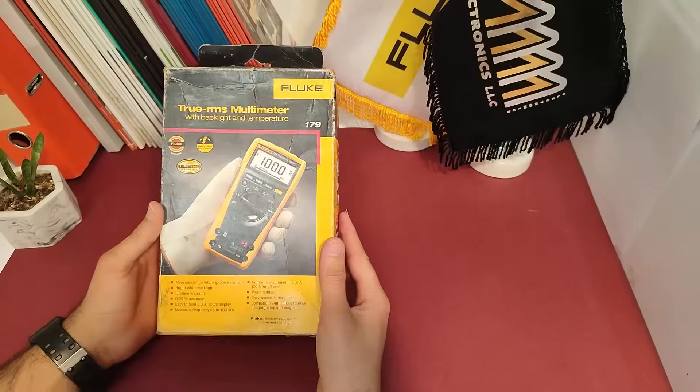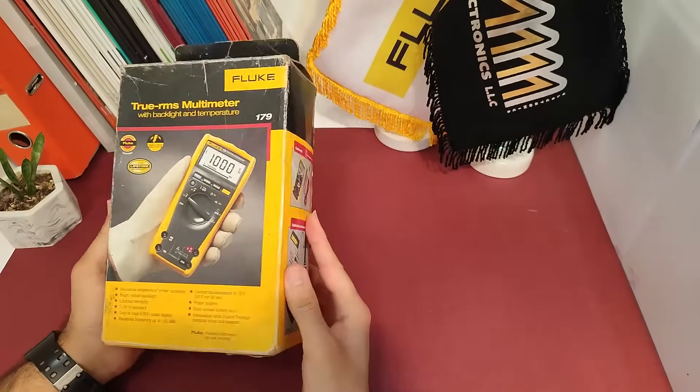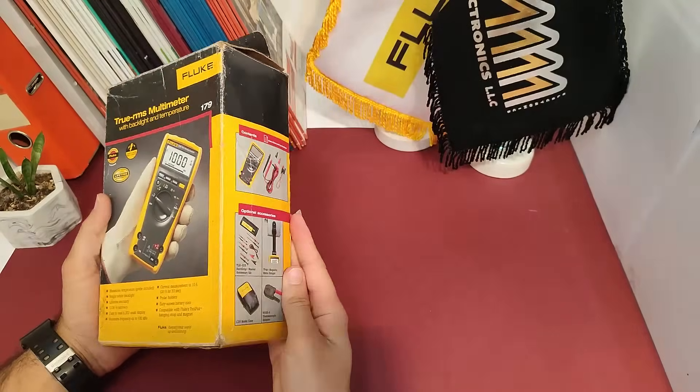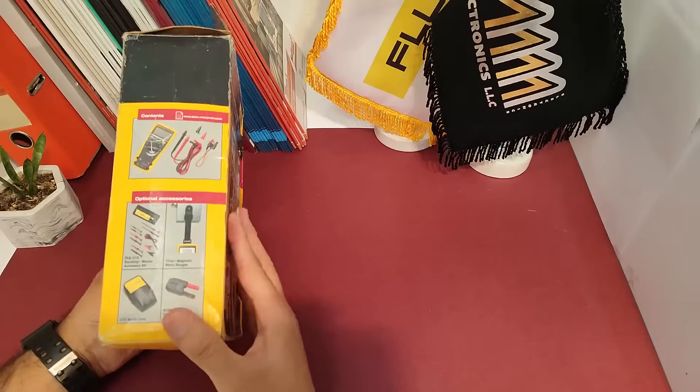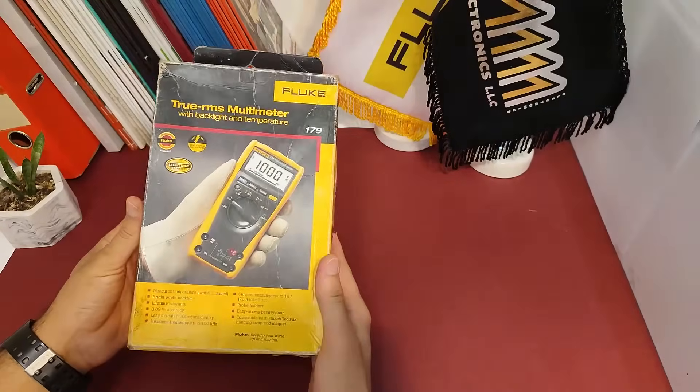Today we will be unboxing and reviewing the FLOG 179 two arms multimeter with backlight and temperature measuring features. This is high quality device that can measure voltage, current, resistance and temperature. It's perfect for both professional and hobby use.